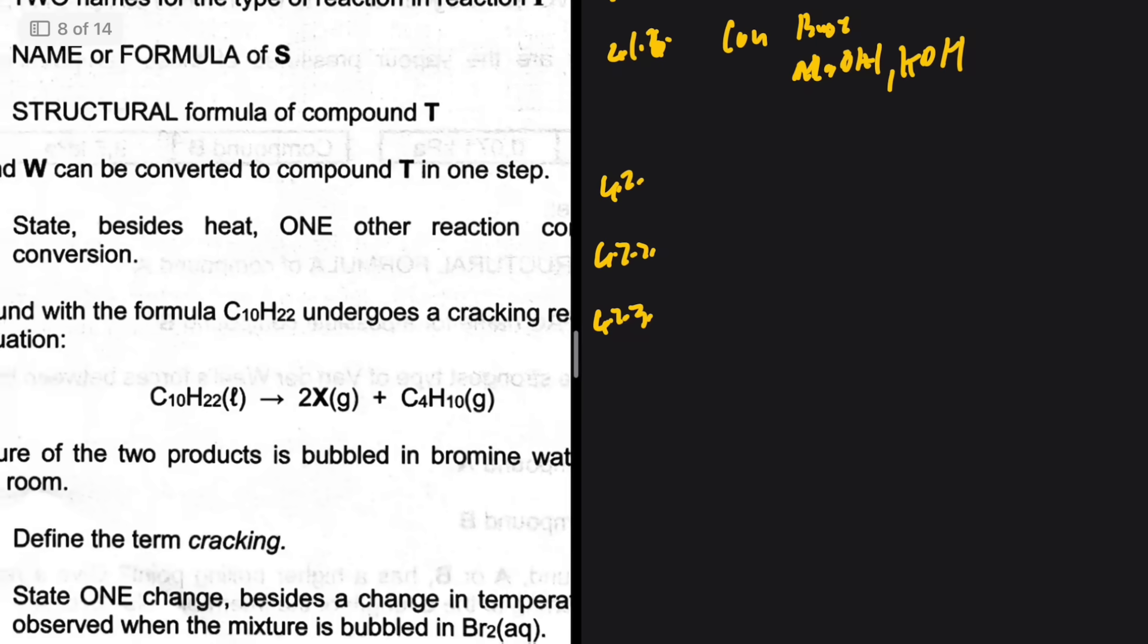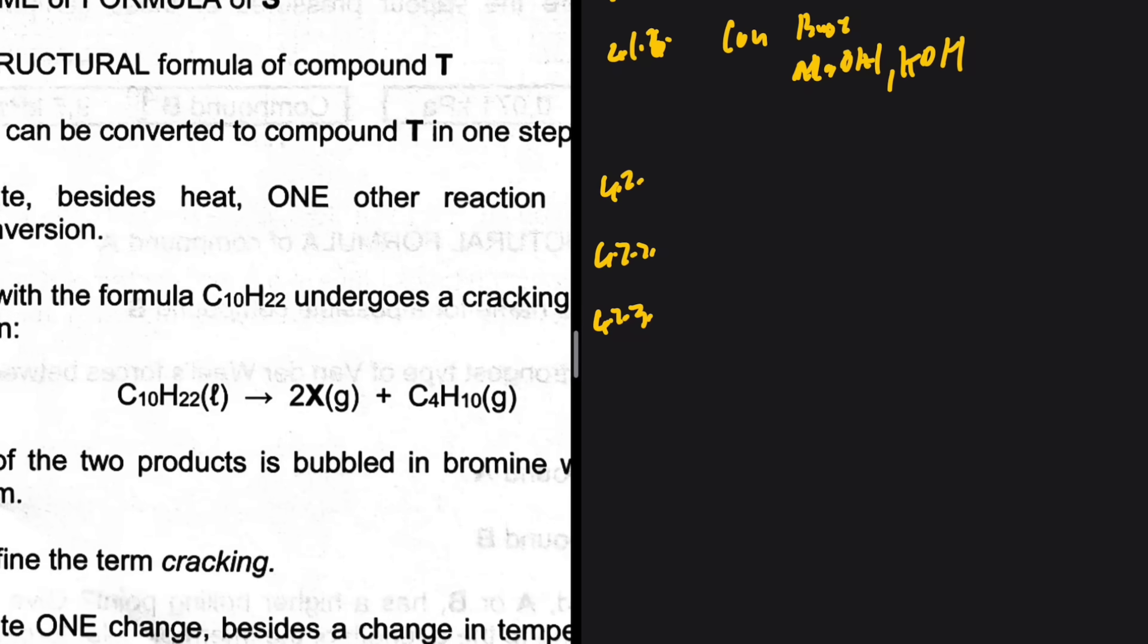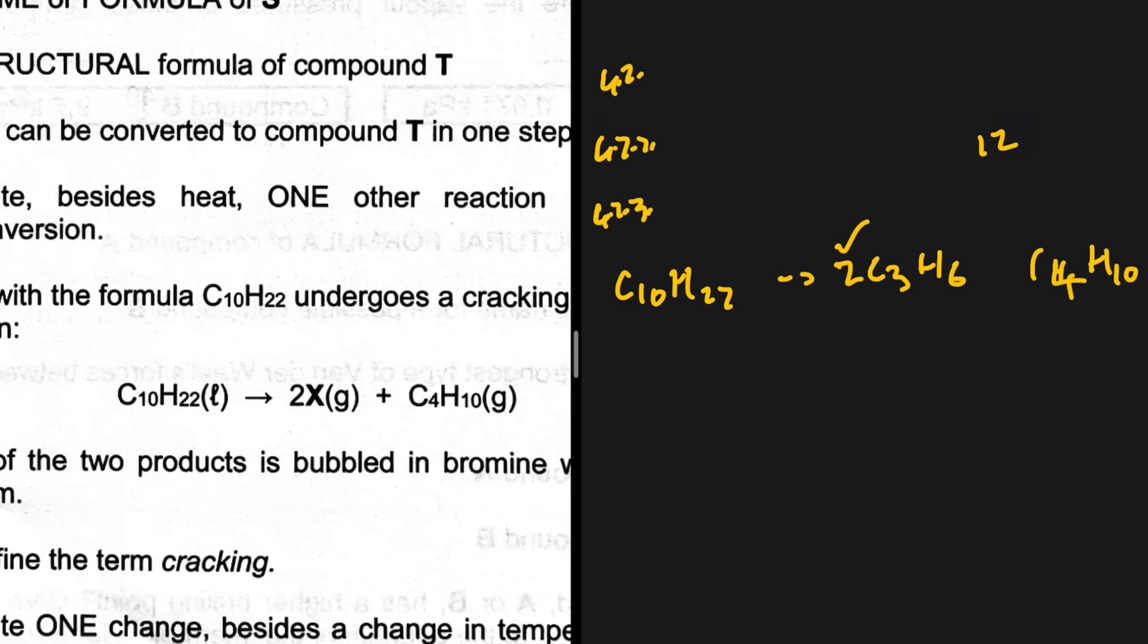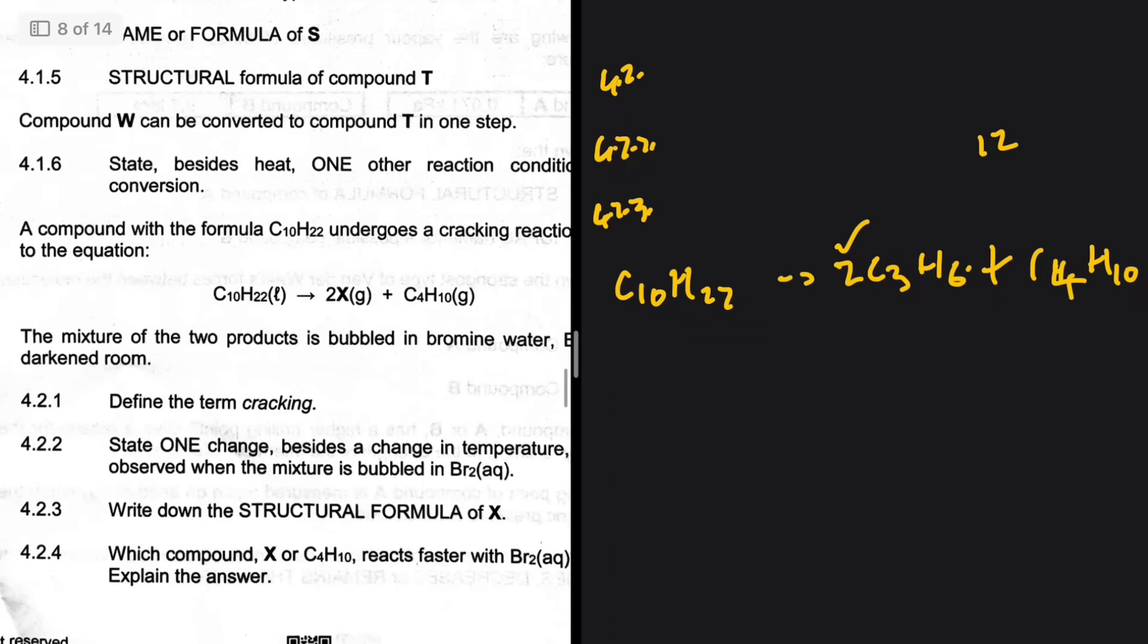4.2.3, write down the structural formula of compound X. Let's determine what X is. We have C10 and then we have C4. How many carbons are we left with on the right that we need? We need six carbons on the right, so because we have the coefficient of two, it means that this would be C3. Six carbons plus four carbons gives us ten. We have H10 there and H here, and on the other side we have H22. On the right hand side we are missing 12 hydrogens, but we have a coefficient of two, so that has to be six. That is C3H6 plus C4H10.